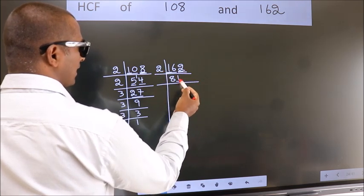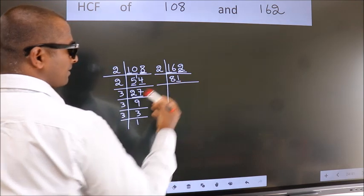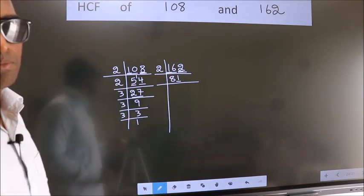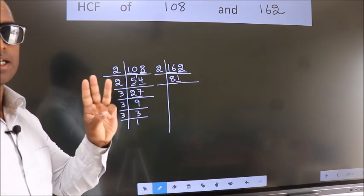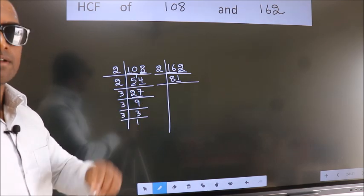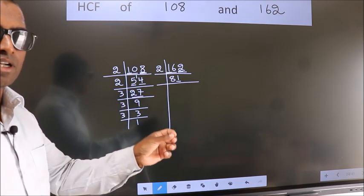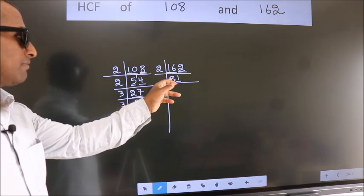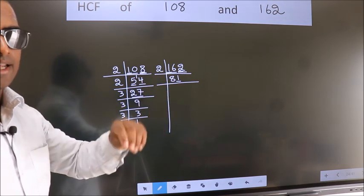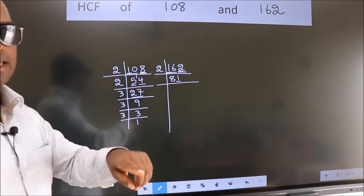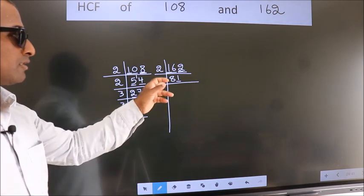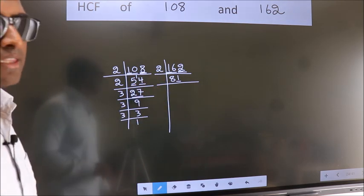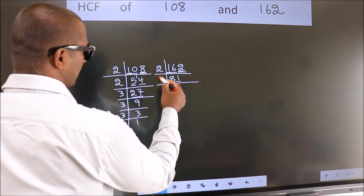Now, last digit 1, not even. So this number is not divisible by 2. Next prime number 3. To check divisibility by 3, for that we should add the digits. 8 plus 1, we get 9. Is 9 divisible by 3? Yes. So this number also divisible by 3. So take 3.